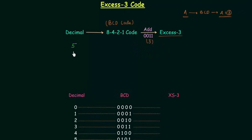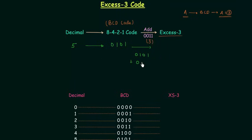Let's say the decimal number is 5. The BCD representation of 5 is 0101. Now we will add 3 to it: 0101 plus 0011. We are going to get 1000 as the result of addition. So XS3 code for 5 is 1000.